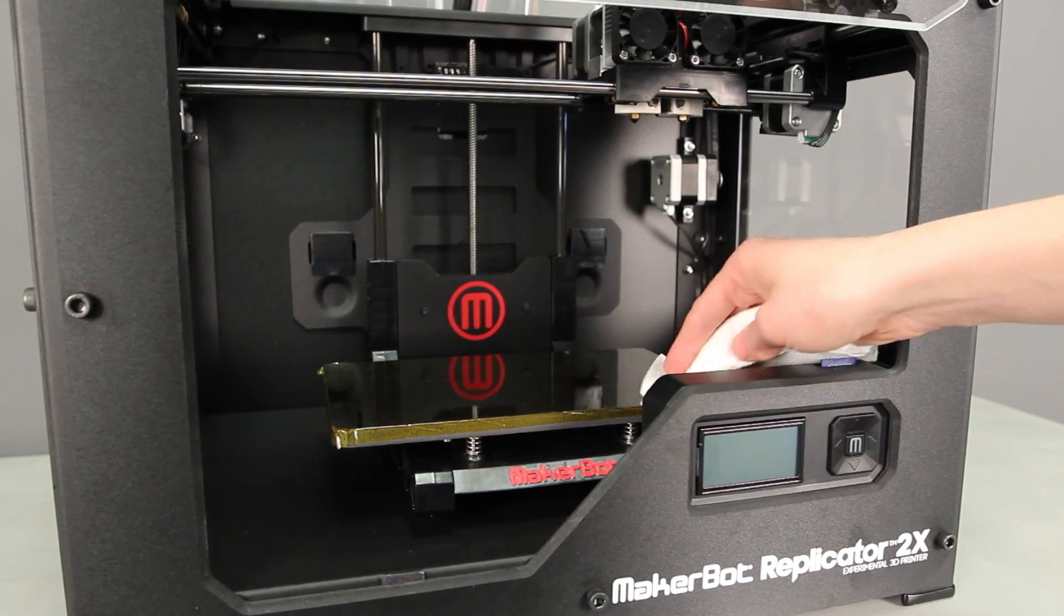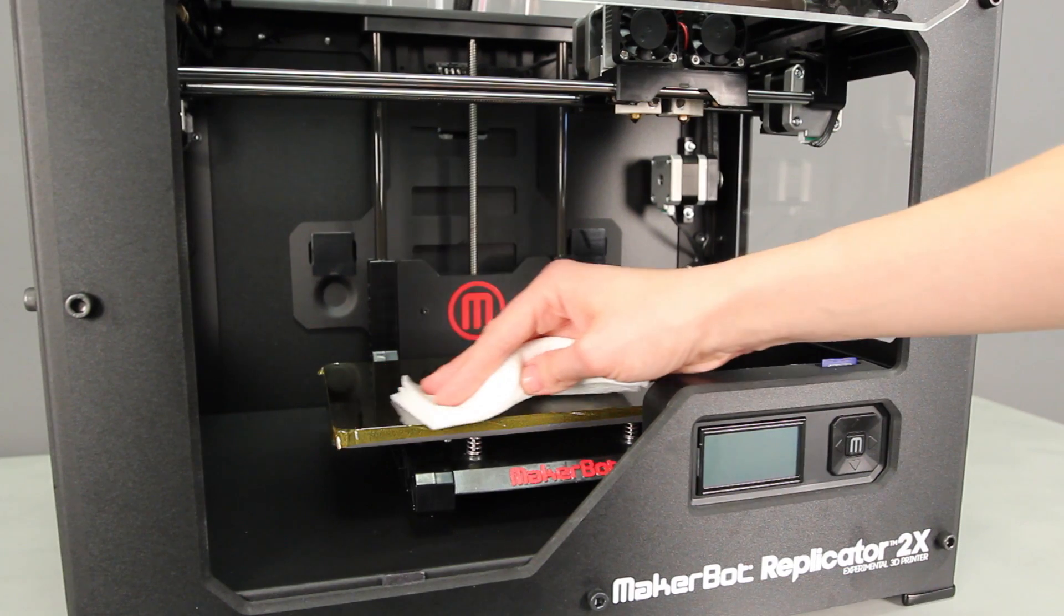It's a good idea to wipe down your build plate with a clean lint-free rag between every print.